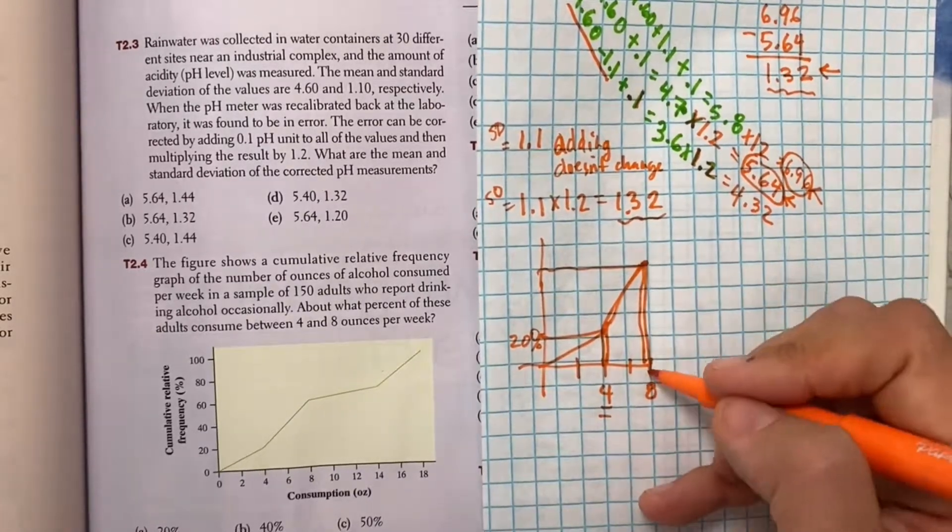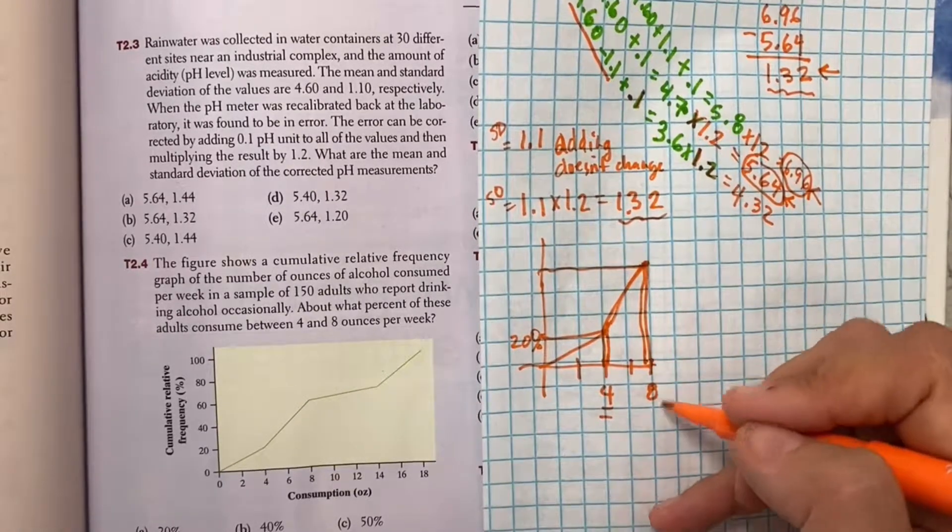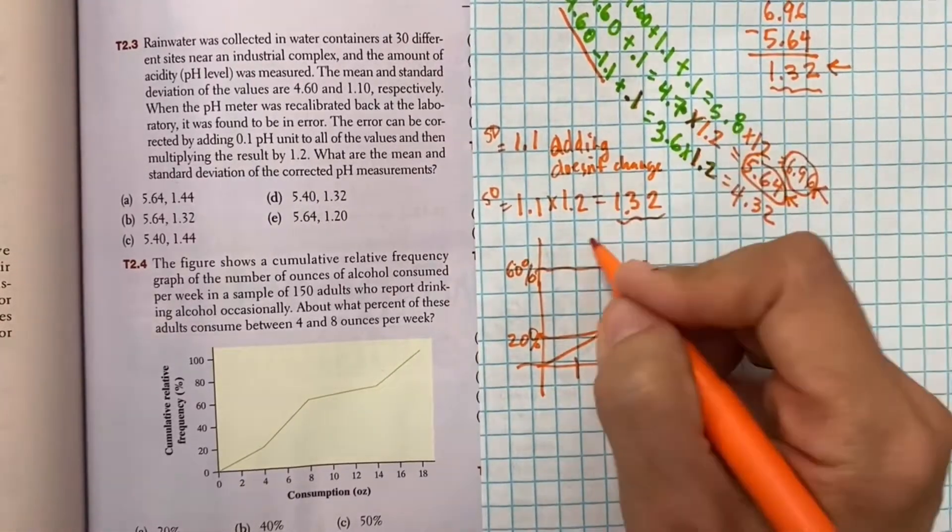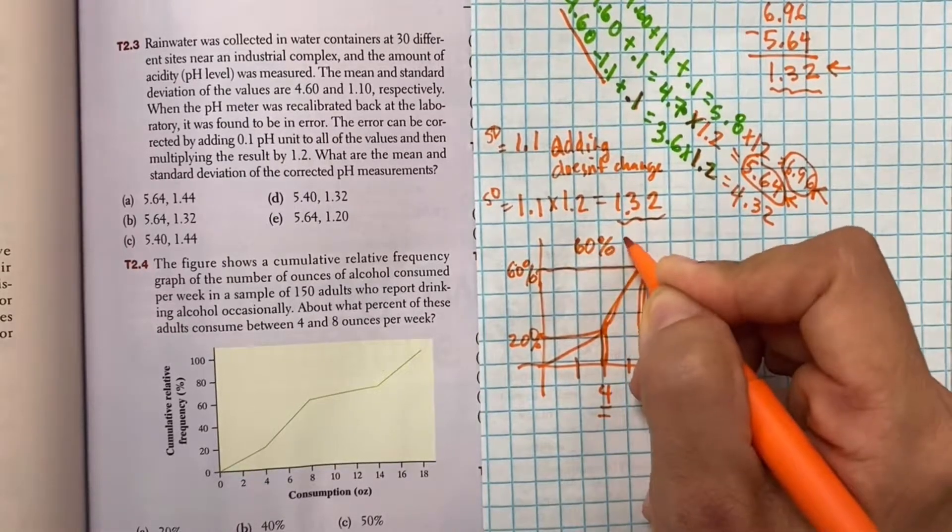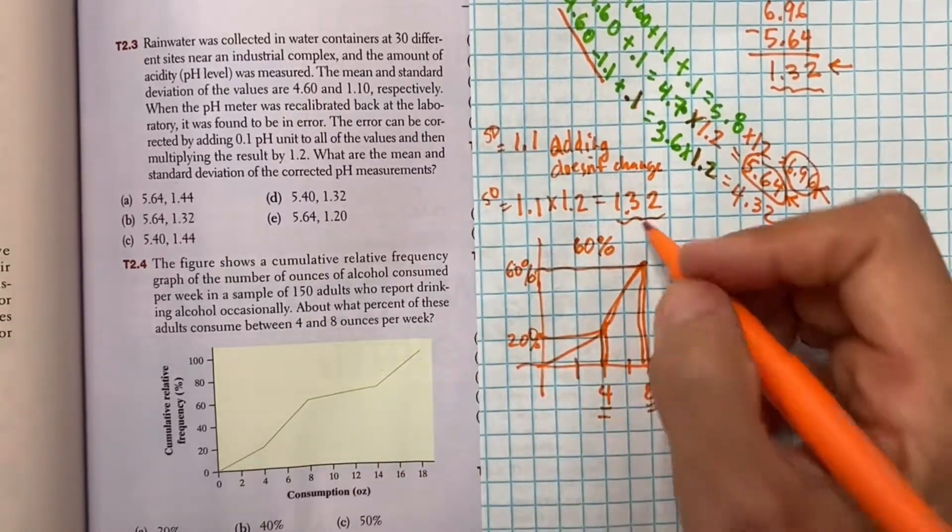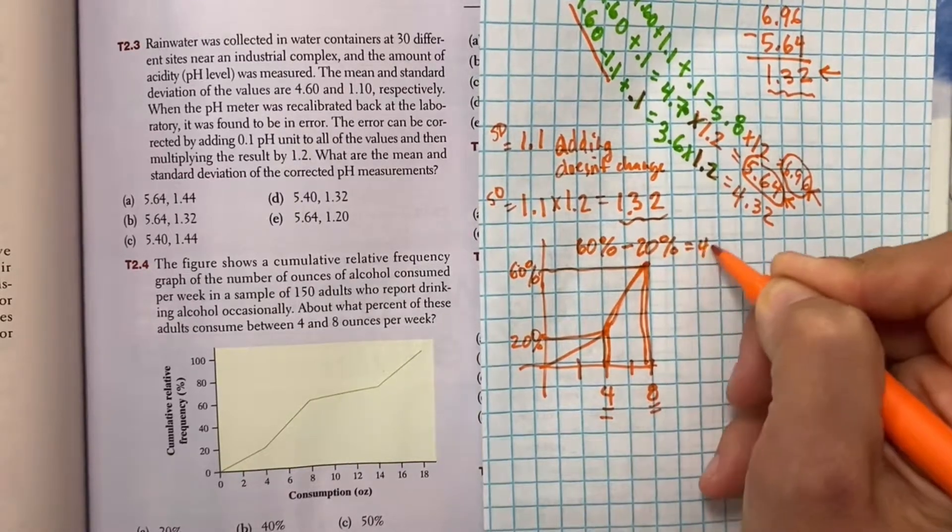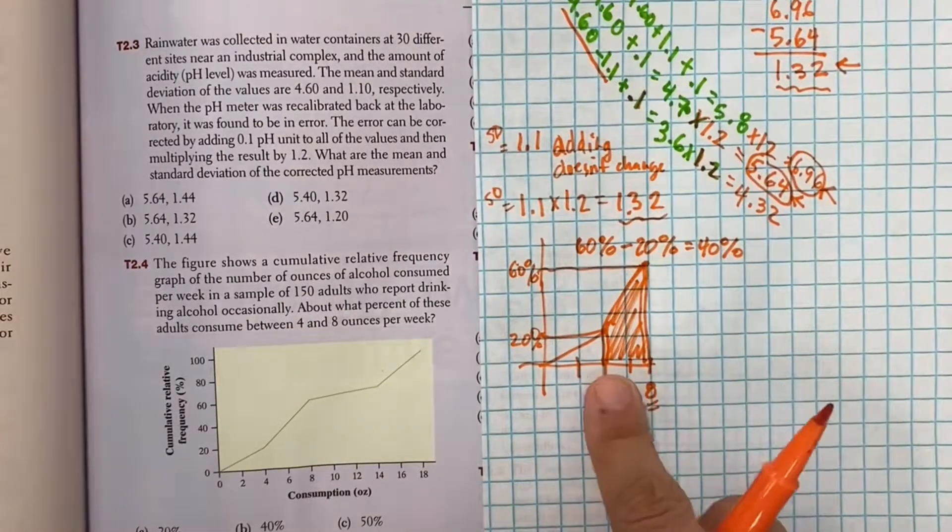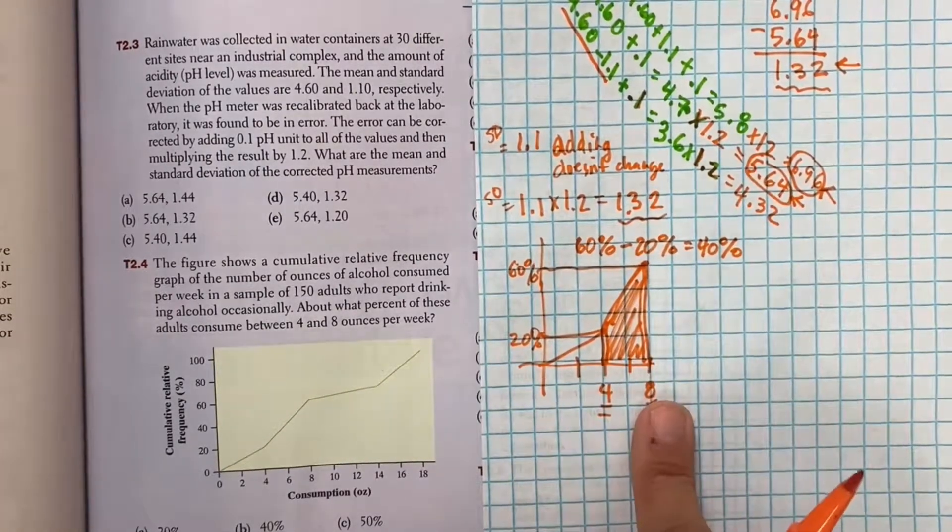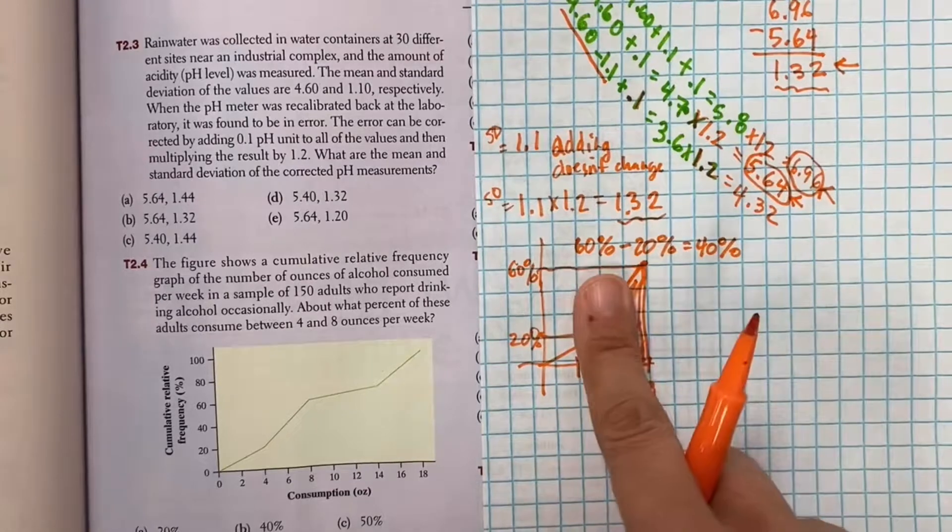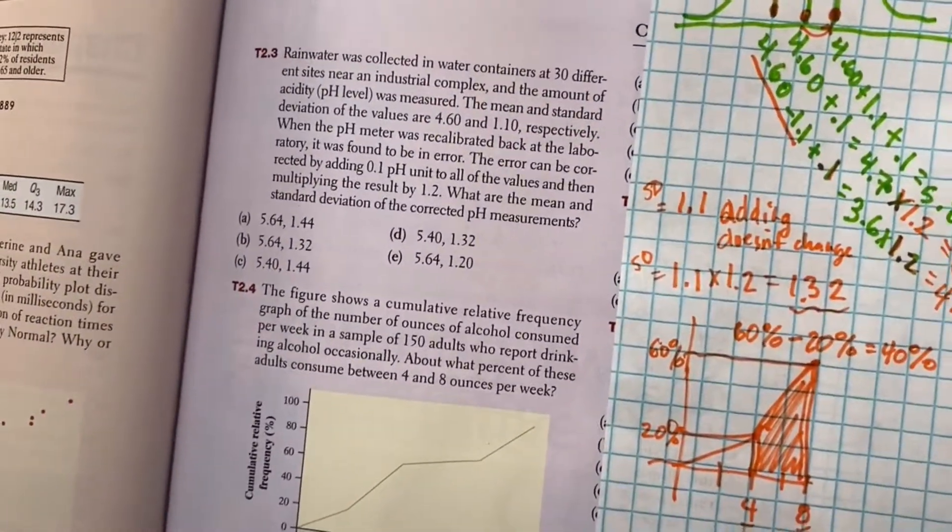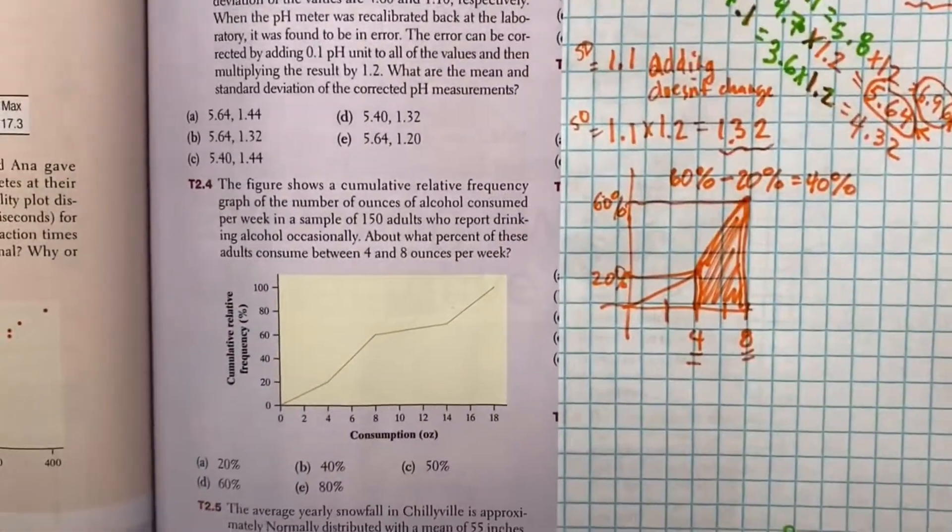And then by the time I talked to the people that consume 8 ounces, I'd talked to 60% of the people. So that should make sense. The amount of people between these two should be 40%. 40% of these 150 adults consume between 4 and 8. And we're reading that right from the chart. That's why it's called a cheater graph. Thanks for joining me. Check out the next video.